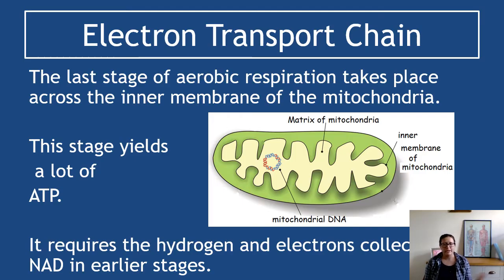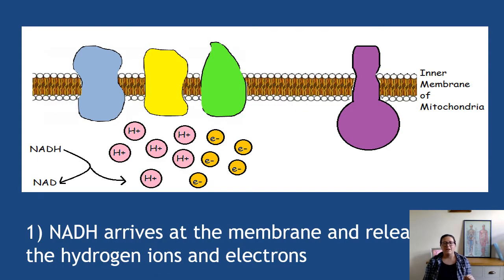It requires the hydrogen and electrons collected by NAD in the earlier stages. Now if you remember this idea, in the glycolysis NAD was becoming NADH, in the citric acid cycle NAD was becoming NADH. All of that NADH was gathering, gathering, gathering and the idea is it's carrying itself to the inner membrane so that it can use that hydrogen and electrons that were cleaved off for this process here.